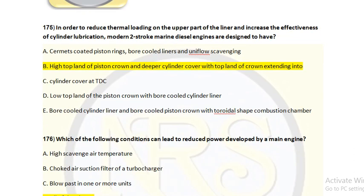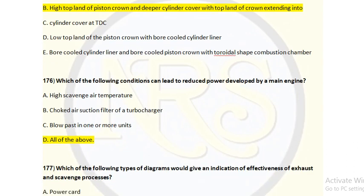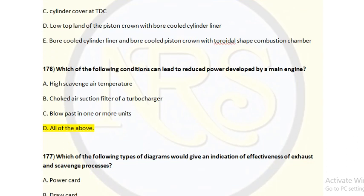Question number 176. Which of the following conditions can lead to reduced power developed by a main engine? Option A, high scavenge air temperature; option B, choked air suction filter of a turbocharger; option C, blow-past in one or more units; option D, all of the above. The correct answer is option D — all of the above.